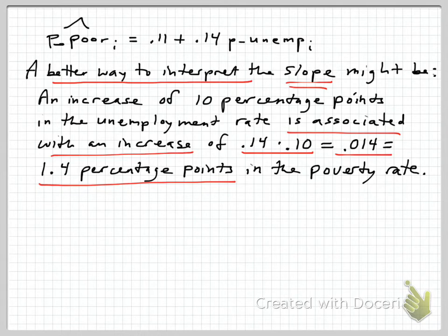Or if you wanted to put it in terms of 1 percentage point, a change of 1 percentage point in the proportion unemployed is going to lead to 0.14 times 0.01, that's 1 percentage point, or 0.0014 proportional change in the proportion poor, or 0.14 percentage points. So however you do it, if you're going to talk in percentage points, you want to translate back and forth to the proportions. And again, these are changes in proportions, not proportional changes.